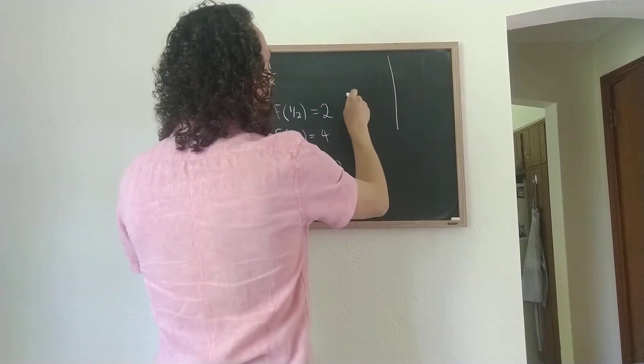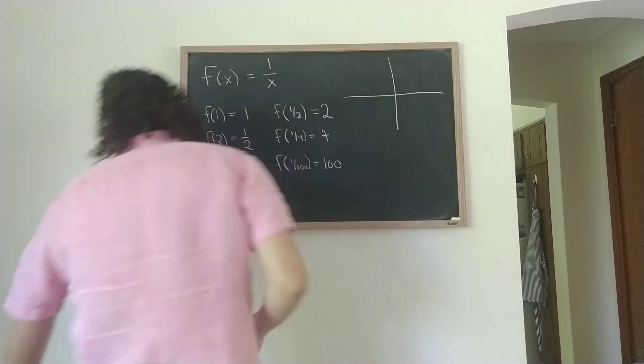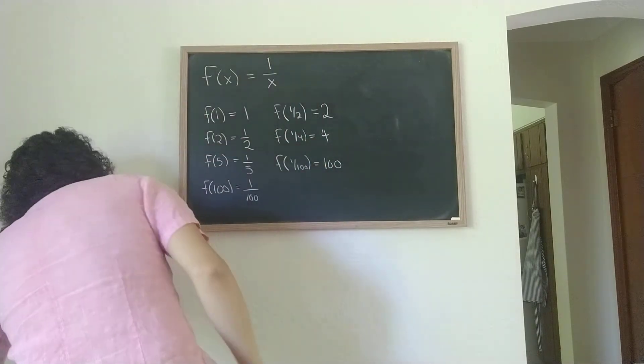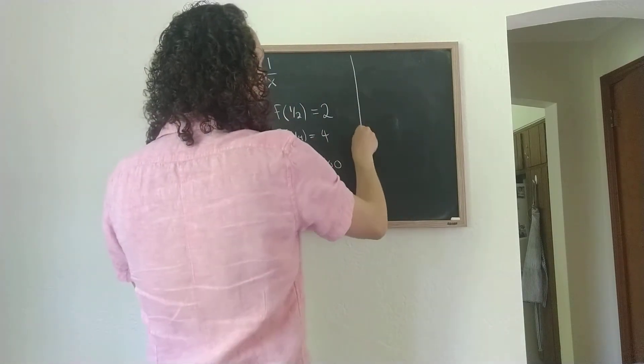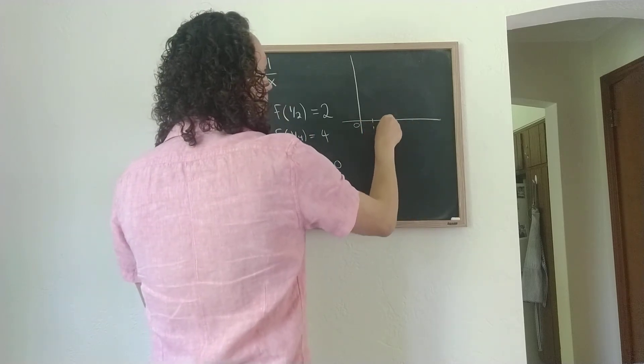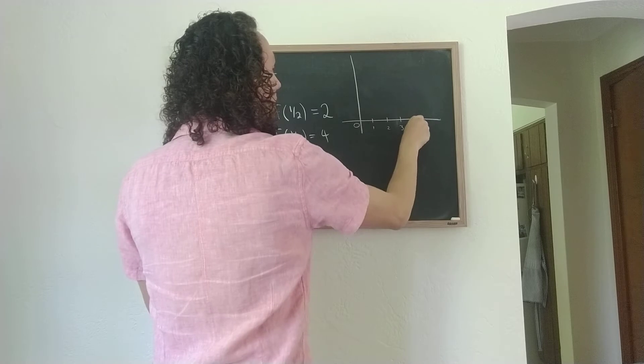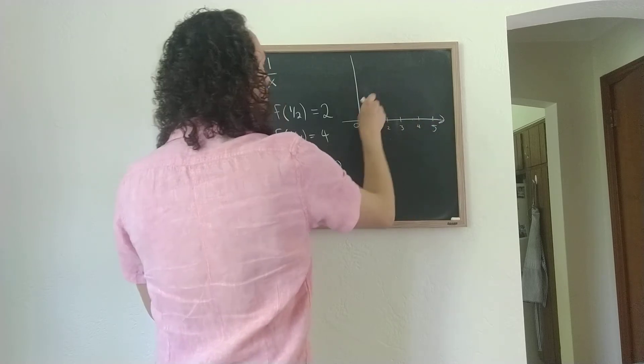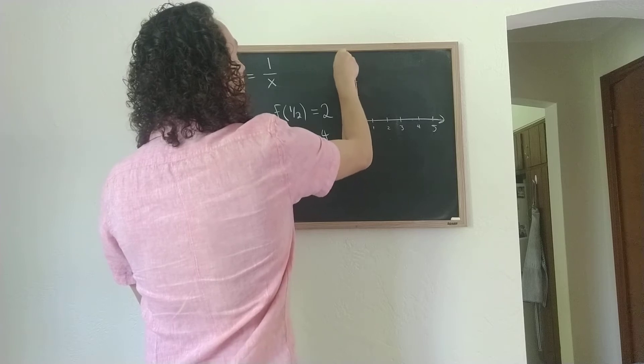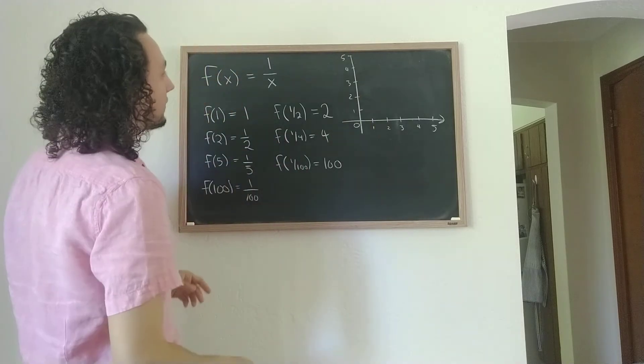So, we also talked about graphing functions. And actually, since I'm not looking at negative numbers, I'll give myself some more space to draw the graph like this. So here's 0, 1, 2, 3, 4, 5. 1, 2, 3, 4, 5.